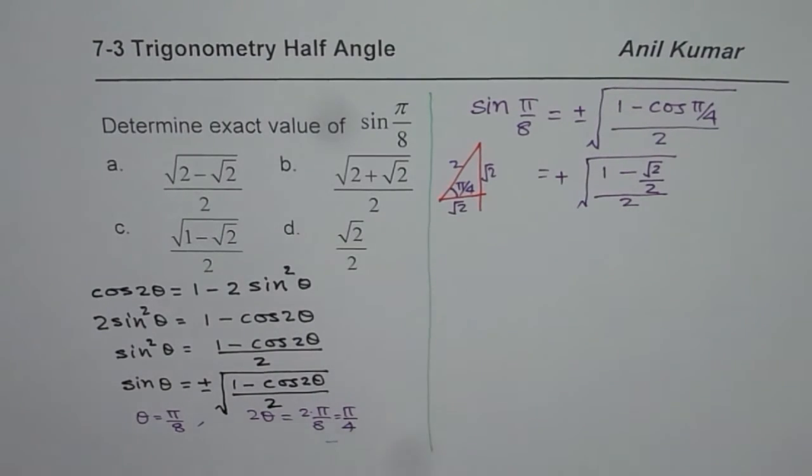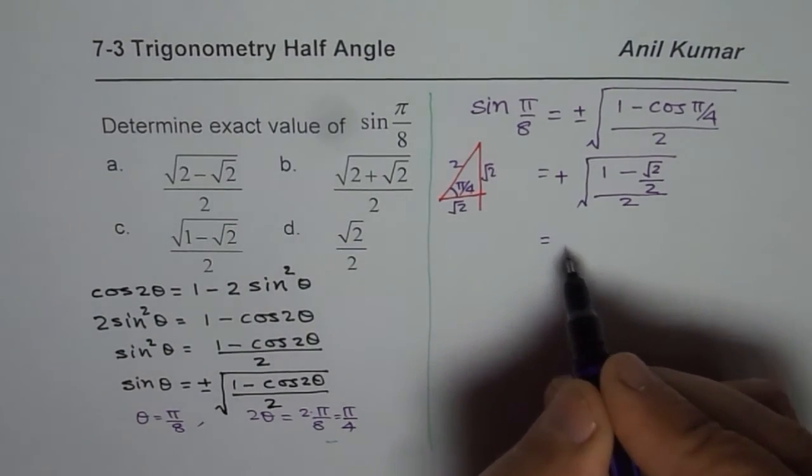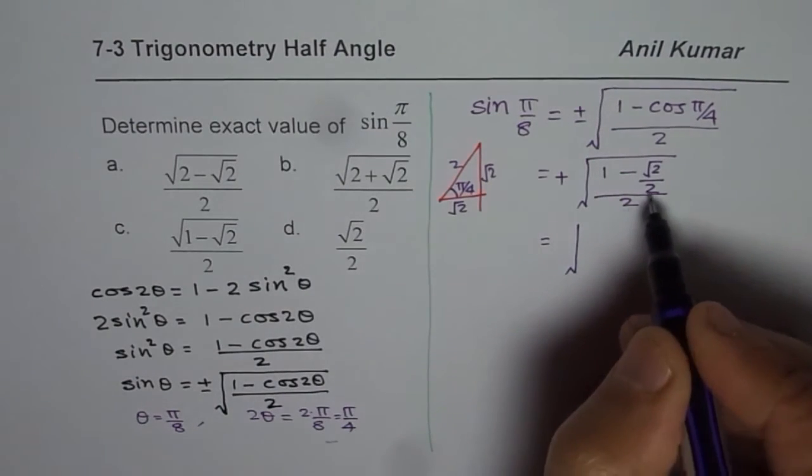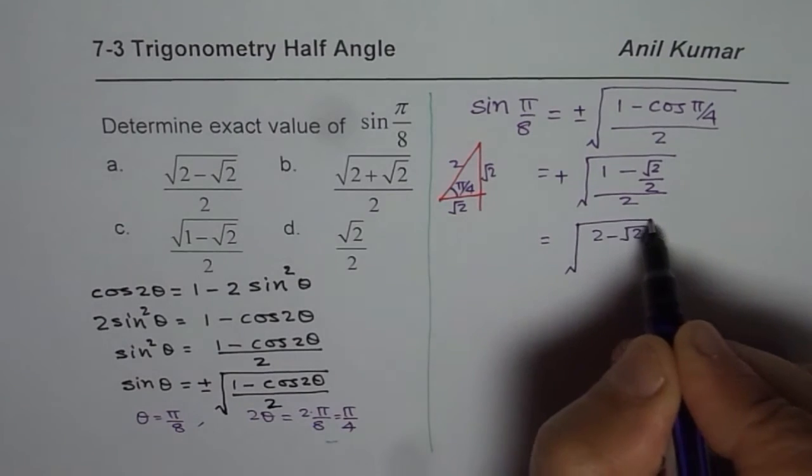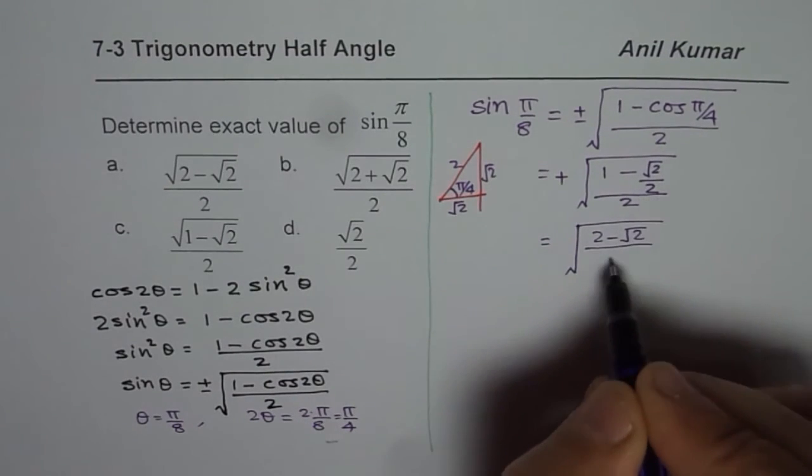All this is within square root. So now we will take common denominator, there is no point writing plus, so we say 2 minus square root 2, divided by this 2, and everything divided by this 2.